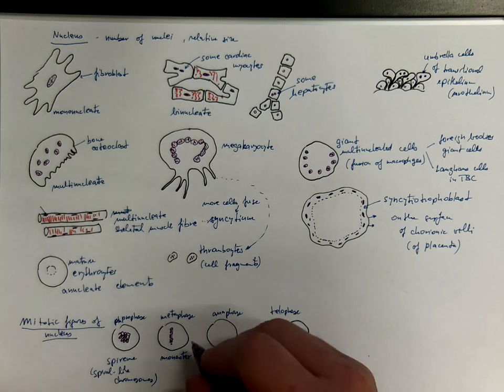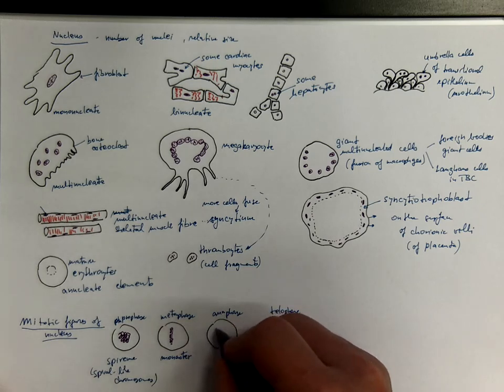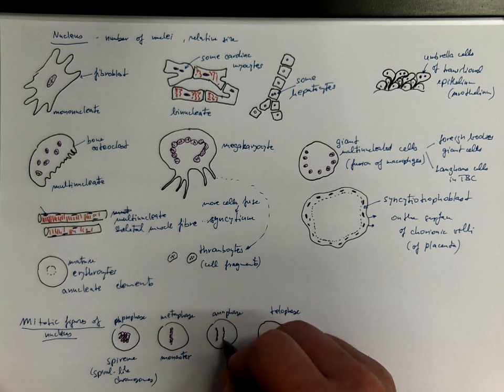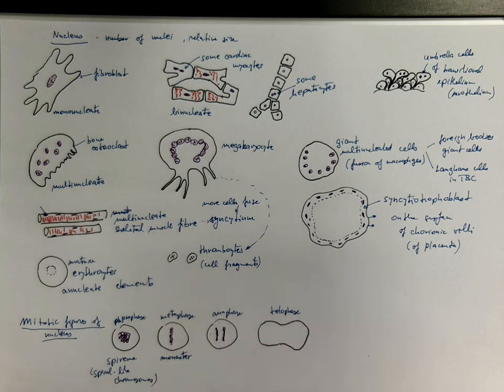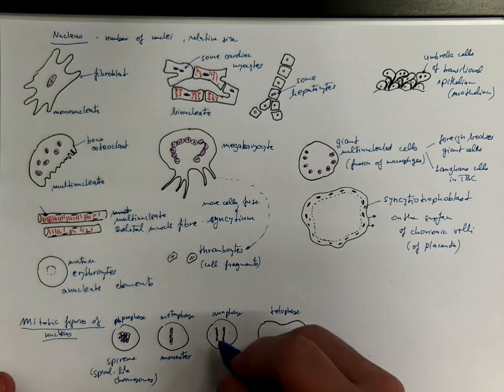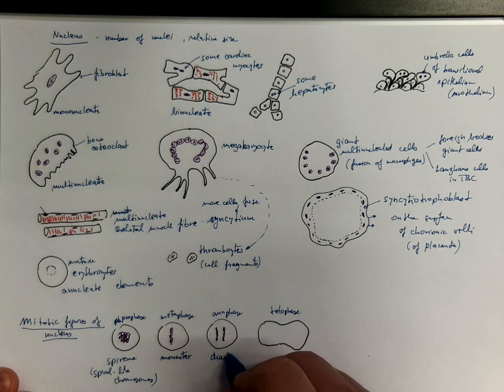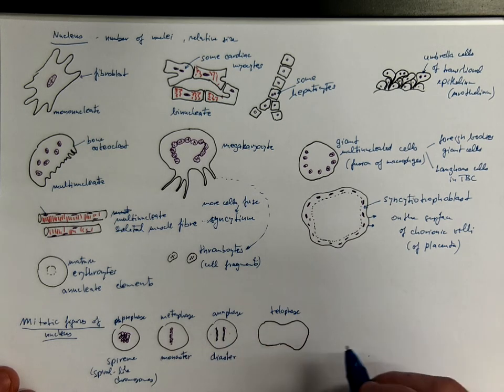While in anaphase, you have already duplicated chromosomes being transported to the opposite poles of the mitotic spindle. So, we call it diaster. There are, like, two objects.